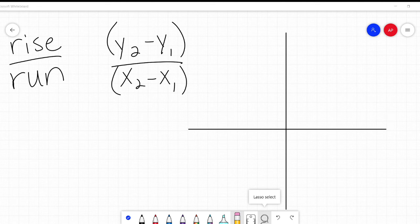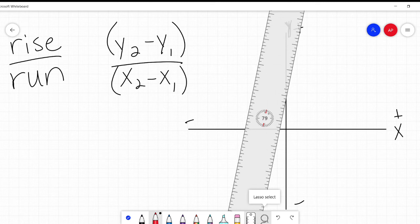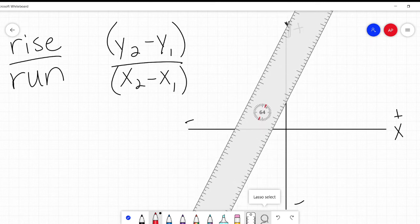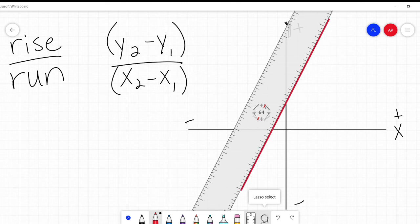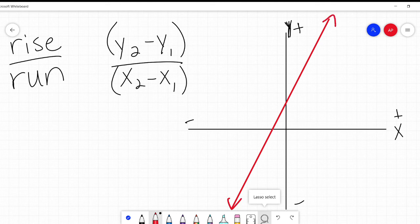As a reminder, it would help if I was in pen mode and not eraser mode. This is x, y. This is our positive, negative, positive, and negative, positive. Let's say I have a line. And it goes through like this. So there's my line.